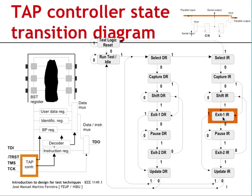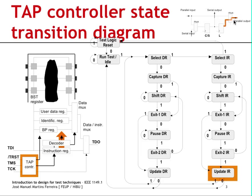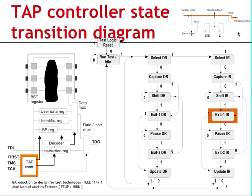We go to the exit one instruction register state and then to the update instruction register state. This is when the new instruction is sent to the outputs of the instruction register to be seen by the decoder, and this is also when the operating mode of the boundary scan cells changes. Initially from test logic reset the bypass instruction was loaded; now we have shifted in the external test instruction, so the boundary scan cells have gone from transparent to controllability mode when entering the update instruction register state.